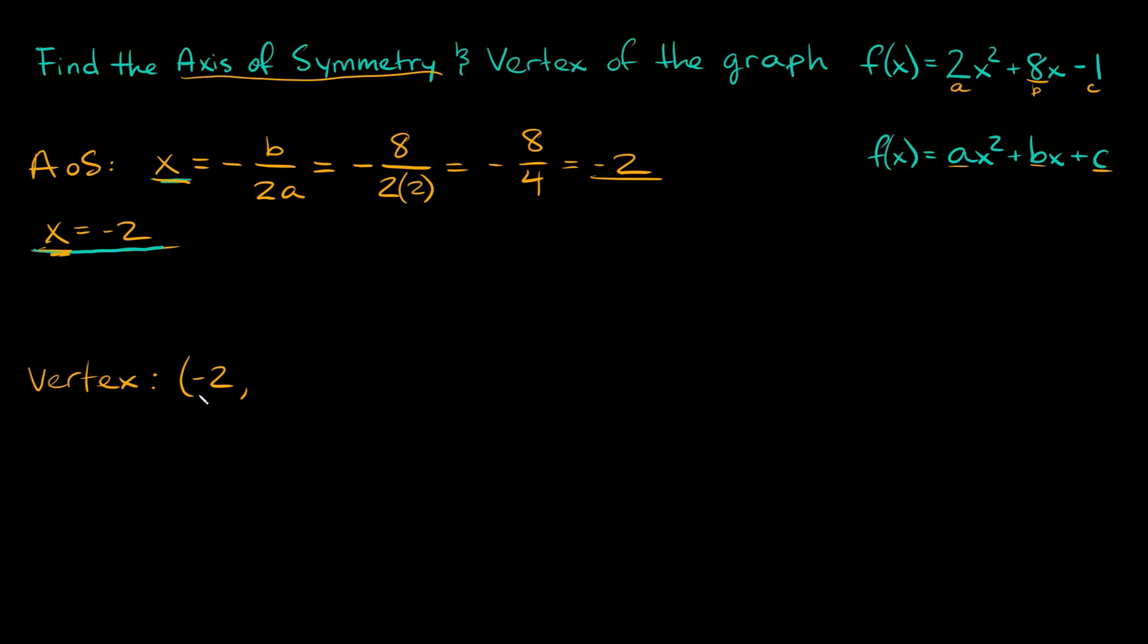To find the y-value, all you need to do is plug in the x-value that we know, negative 2, into this formula for x. To find the vertex we're going to say that f(x) equals 2x squared plus 8x minus 1. But we know what our x is—it's negative 2. We're going to plug in negative 2 there and negative 2 there. This equals 2 times negative 2 squared plus 8 times negative 2 minus 1.